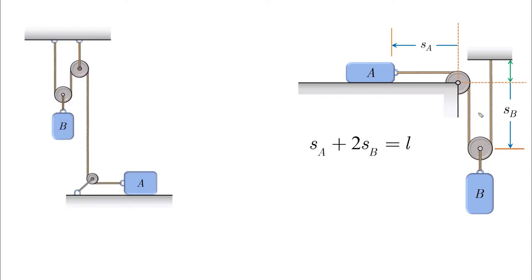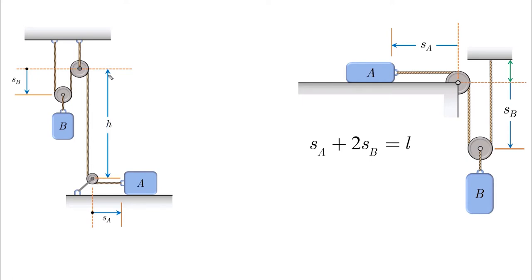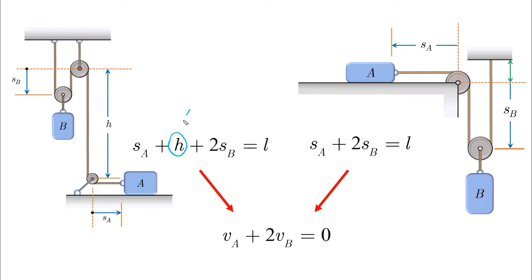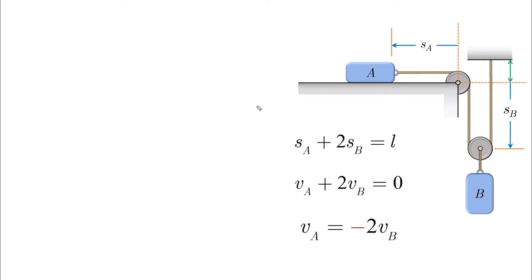Comparing this to another system: coordinate A from a fixed point, coordinate B from another fixed point — note that the fixed point does not have to be from the ceiling. Adding up the whole chord, we must include the constant length h. Taking the derivative of both equations gives the same result: vA plus 2vB equals zero, because h is constant and its derivative is zero.